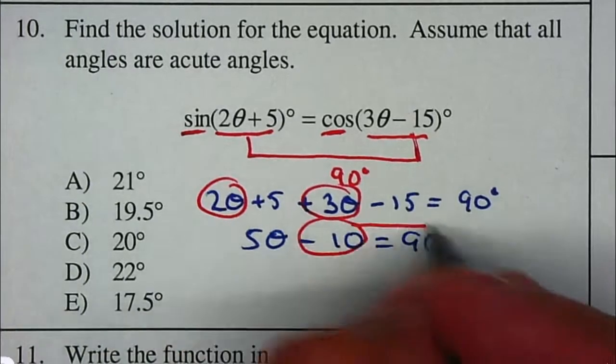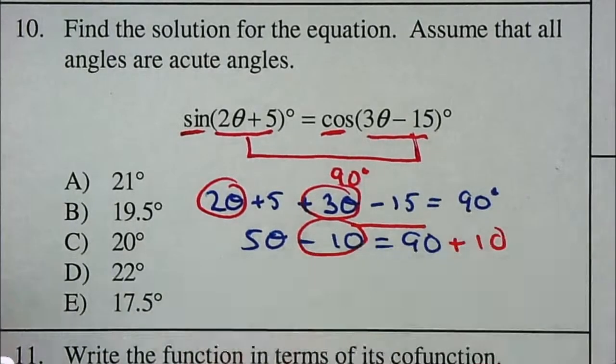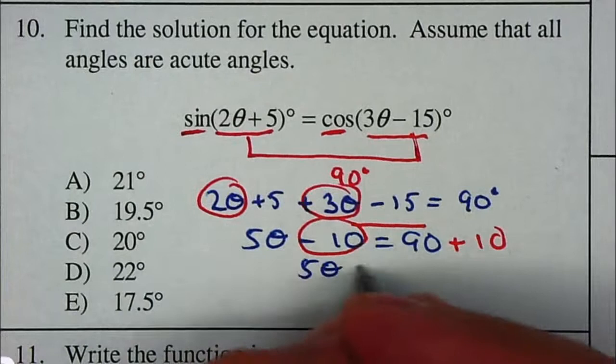Move that 10 to the right, add a positive 10. That gives me 5 theta is equal to 100.